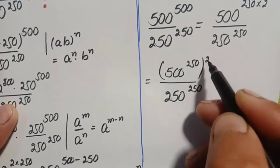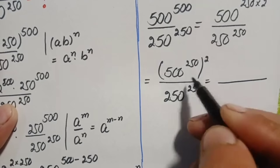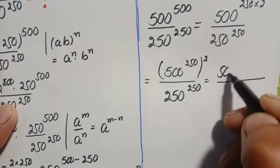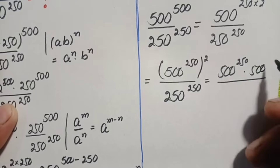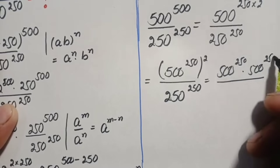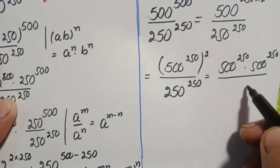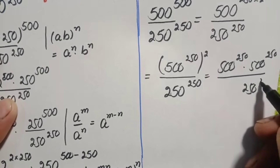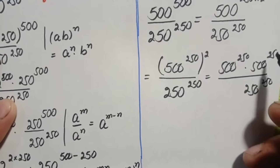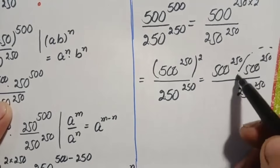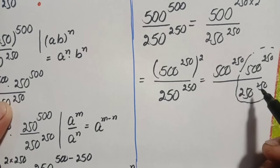Divided by 250 raised to the power 250. Now since there is a square over this number, we can write this number as 500 to the power 250 times 500 to the power 250, divided by 250 raised to the power 250. These two numbers have the same power 250, so here we use the same-power exponential identity.